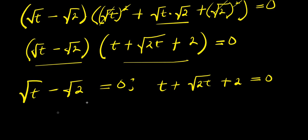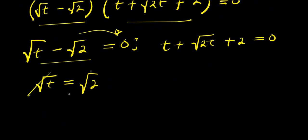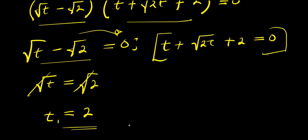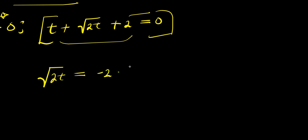We can solve each equation individually. Starting with the first: square root of t equals square root of 2 by moving the term over. Squaring both sides gives t equals 2, which is my first solution. Now we need to solve the other equation to find the other values of t. I can move 2 over and rearrange.